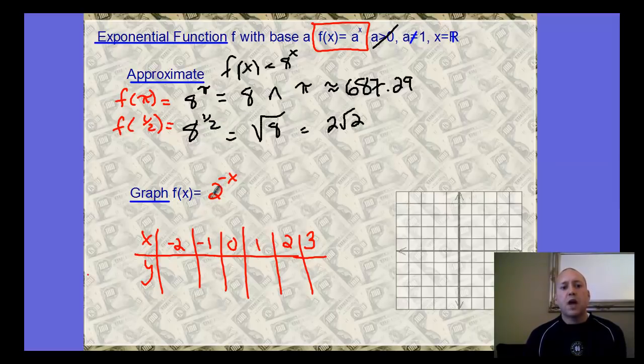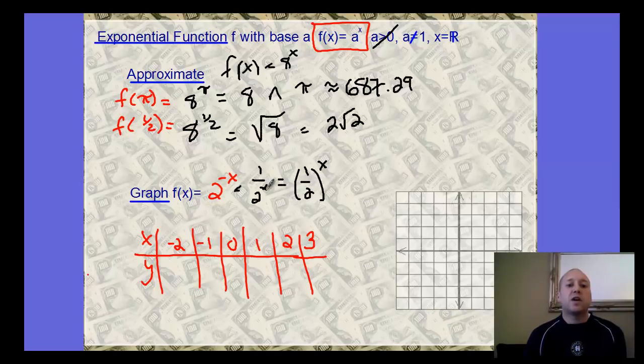For graphing f(x) equals 2 to the negative x, we can manipulate this again. This would be like 1 over 2 to the x. There's not an exponent here for the 1, but 1 to any power is going to be 1. So I can rewrite this as 1 half to the x power. This is where it becomes important to manipulate expressions using exponent rules to help us better understand what's happening in the problem.